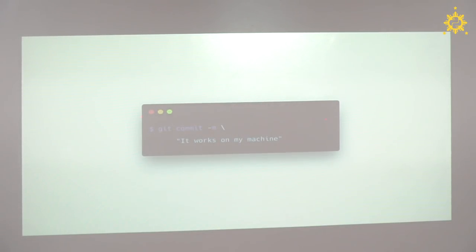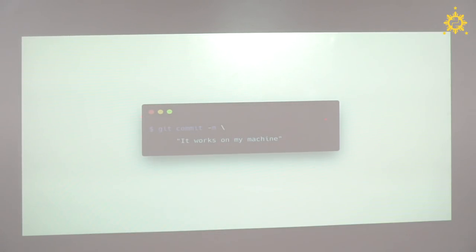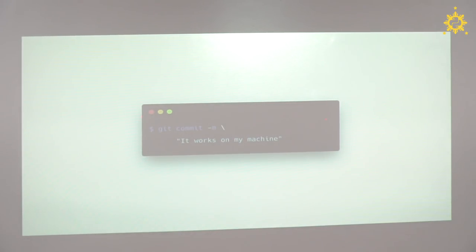Did you ever make this commit message: "git commit — it works on my machine"? What happens when you push it to your build server? Oh, it suddenly stops working. But it works on my machine when the operations team asks — you know, it works on my machine.